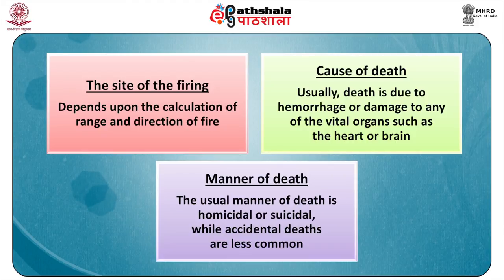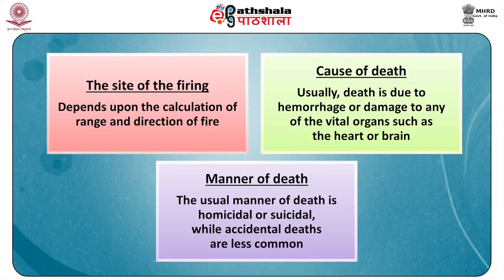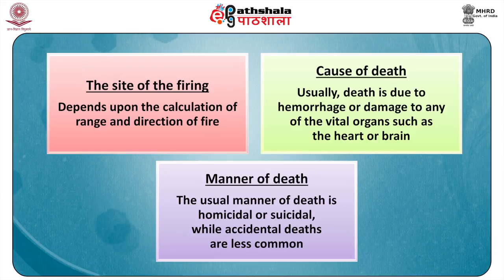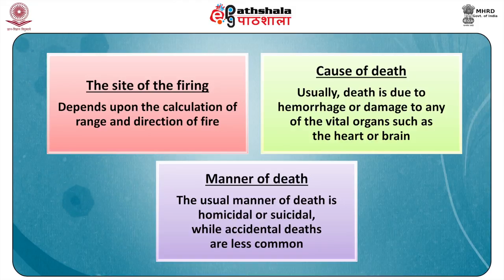The site of firing depends on the calculation of range and direction of fire. The cause of death is usually due to hemorrhage or damage to any of the vital organs such as the heart or brain. The manner of death can be homicidal or suicidal, while accidental deaths are less common.